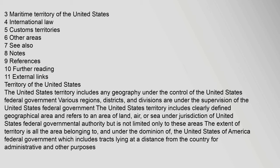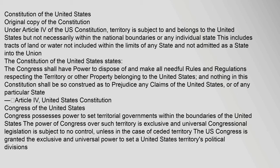The United States Territory includes any geography under the control of the United States federal government. Various regions, districts, and divisions are under the supervision of the United States federal government. The United States Territory includes a clearly defined geographical area and refers to an area of land, air, or sea under jurisdiction of United States federal governmental authority, but is not limited only to these areas. The extent of territory is all the area belonging to, and under the dominion of, the United States of America Federal Government, which includes tracts lying at a distance from the country for administrative and other purposes.